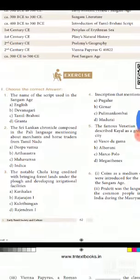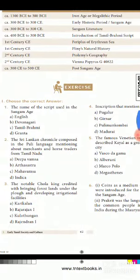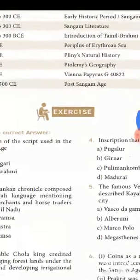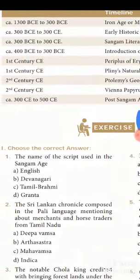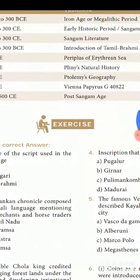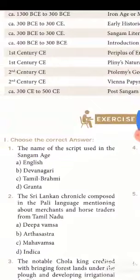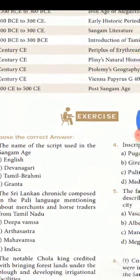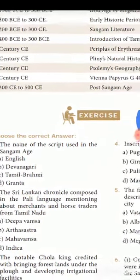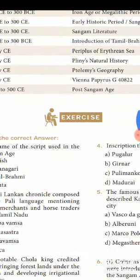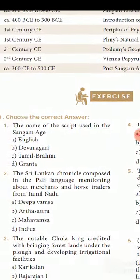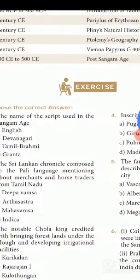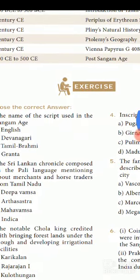The first century CE includes the Periplus of the Erythraean Sea, and also Pliny's Natural History. The second century CE includes Ptolemy's Geography and the Periplus Maris Erythraei (Vienna Barbarus). Next, 300 CE to 500 CE is the post-Sangham age.